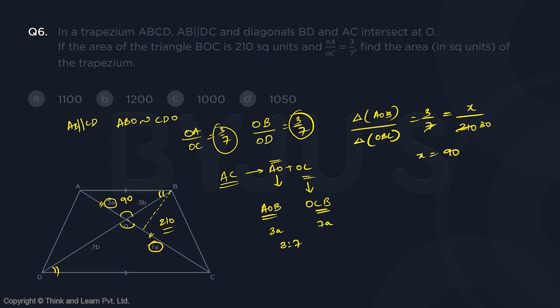Okay. Now, once you get that, by that logic, we will get a very similar understanding for this as the base. DO and OB is the same straight line. On DO, you have this triangle as the base. And on OB, you have this triangle as the base.